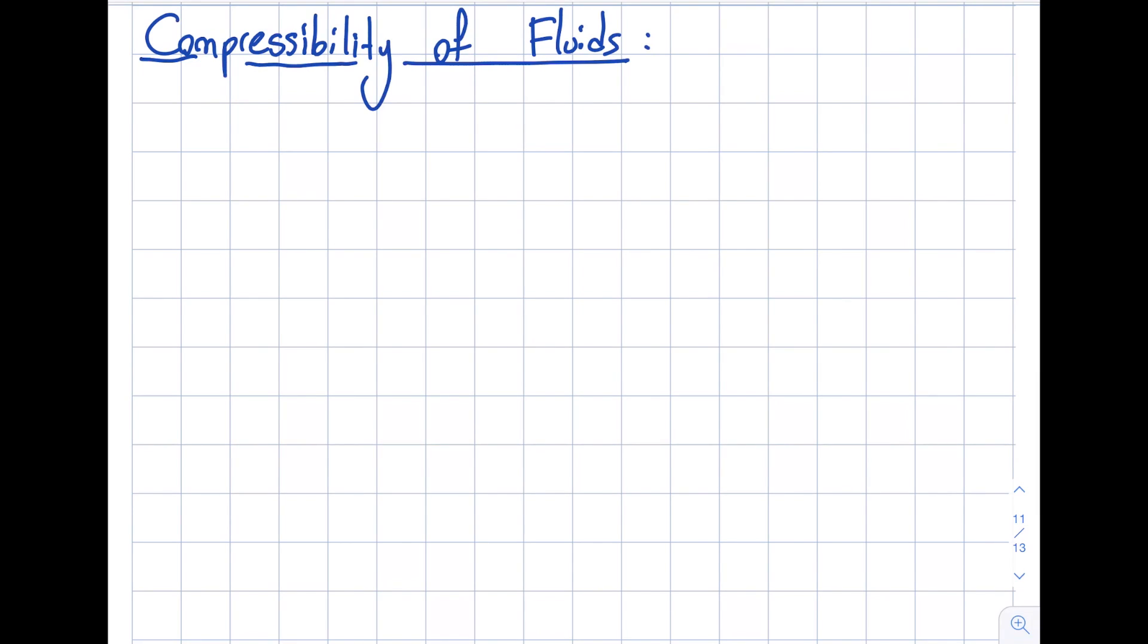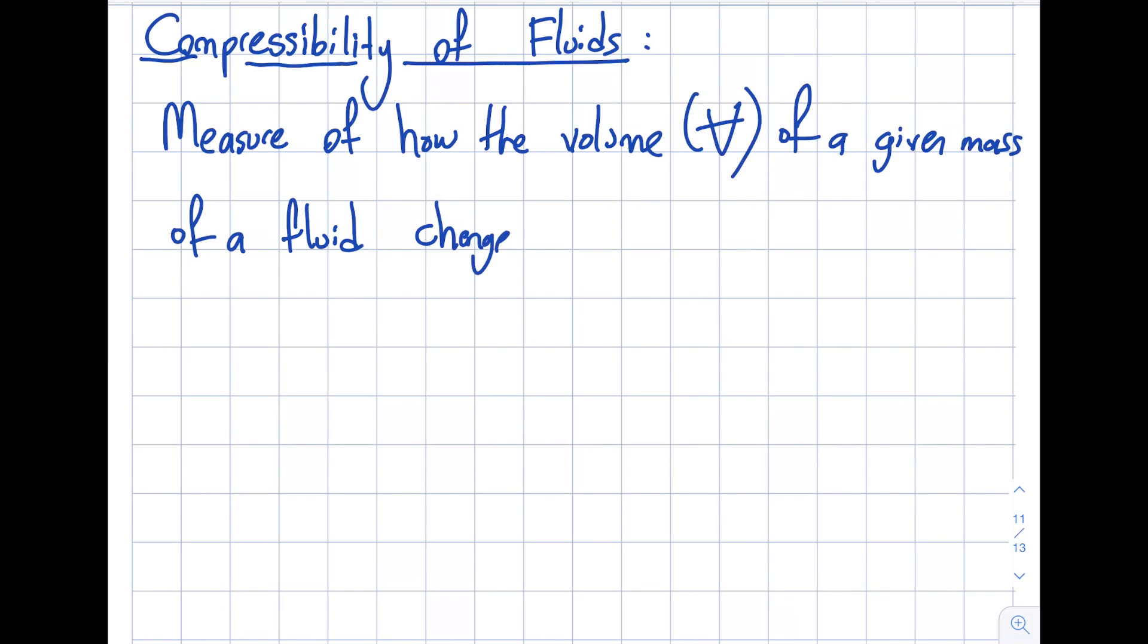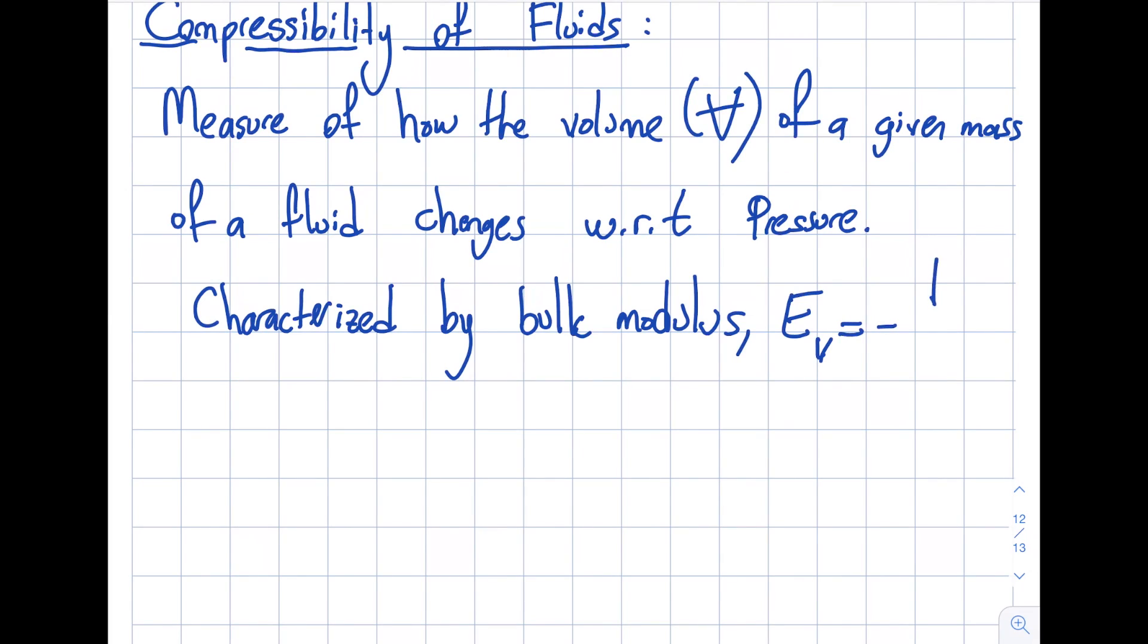So the compressibility is basically a measure of how the volume of a given mass of a fluid changes with respect to pressure. It's characterized by bulk modulus, and this is E sub V. The formula is minus dP by dV by volume.